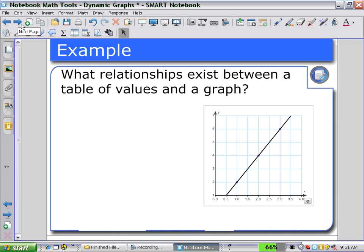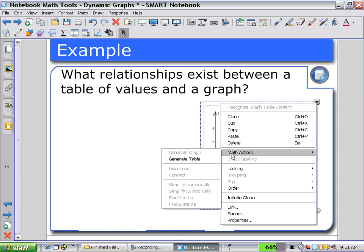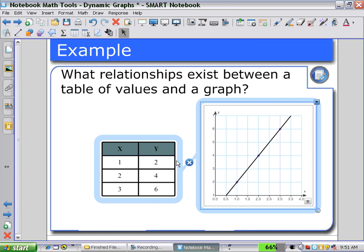Here's an example. What relationships exist between a table of values and a graph? So here's a graph. Selecting it using a pull-down menu, selecting math actions and generating a table. And now I have the points that appear on a graph.